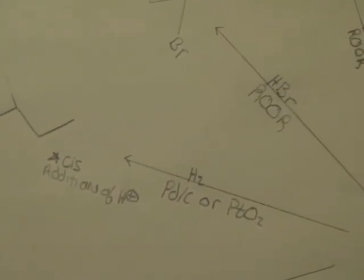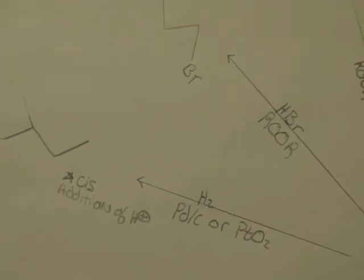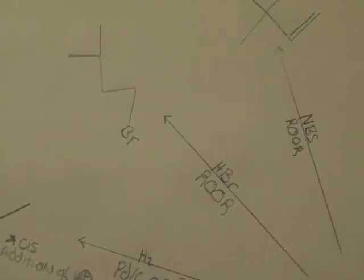H2 with PDC or PTO2, that will cause a cis addition of hydrogen. Both of those hydrogens go to the same plane and the double bond on the same side.